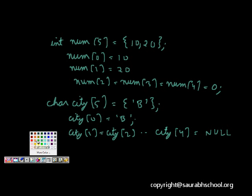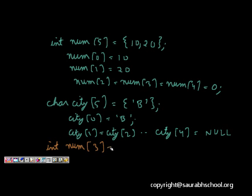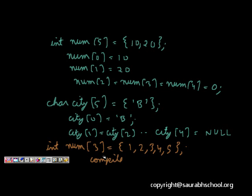If you have fewer initializers than the array size, that is fine. But if you define int num[3] = {1, 2, 3, 4, 5}, that is illegal because memory is only allocated for three elements and you are initializing five. This will not compile — it gives a compilation error.